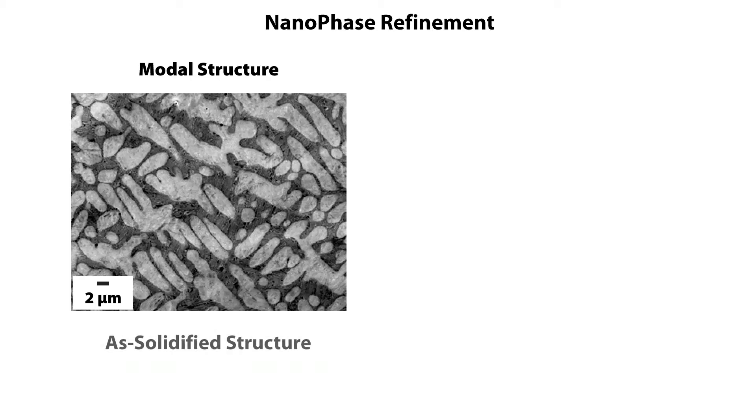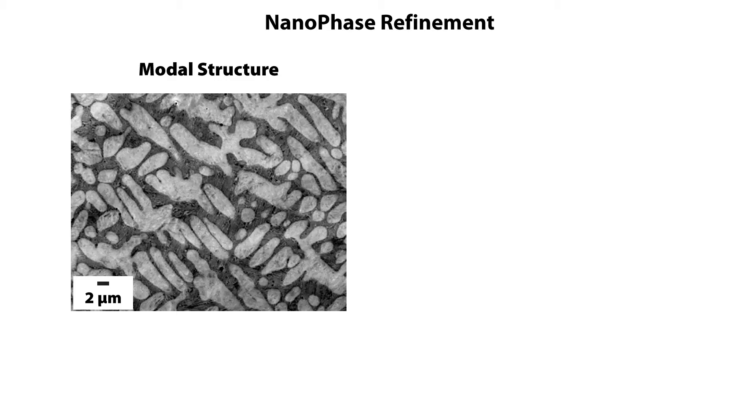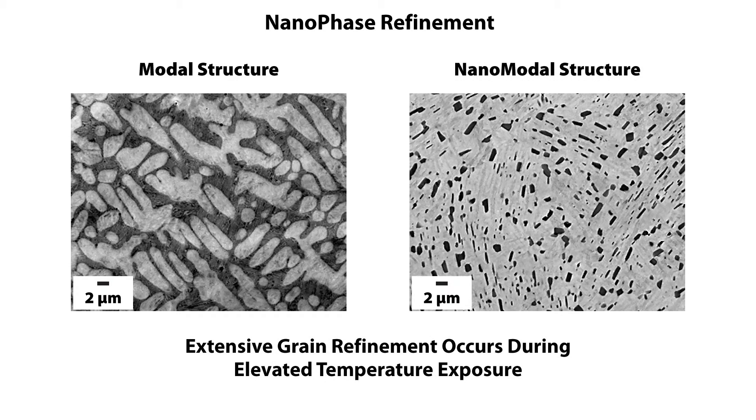What we discovered is a couple of unique mechanisms to allow us to create structures at high temperatures and then maintain them through processing. The first one is called static nanophage refinement. This modal structure is essentially the as-solidified structure, generally formed dendritically and generally forming at a micron grain size. This structure, when exposed to high temperatures — typically in the range of 0.85 to 0.95 of the homologous melting point — will then refine into what we call a nanomodal structure. We can take materials at a micron scale, take them to high temperatures, and these structures will then transform into nanoscale structures with reductions in grain size by more than an order of magnitude.